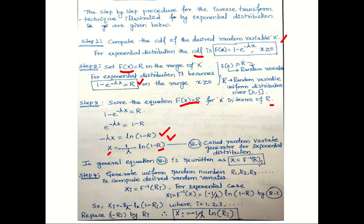In general this equation is written as x = F⁻¹(r), where r is the random number. In Step 4, this is generalized as x_i = F⁻¹(r_i), where i = 1, 2, 3, 4, and so on. The final equation for generating random variates is x_i = −(1/λ) ln(r_i). Here r_i is the random number and x_i is the random variate. These steps constitute the inverse transform technique for exponential distribution.